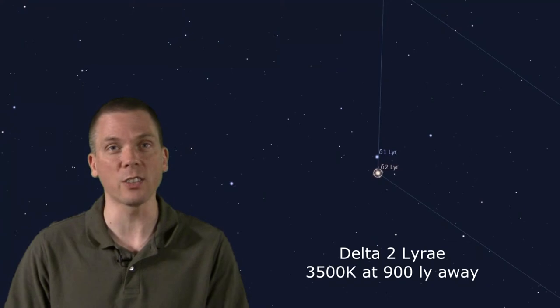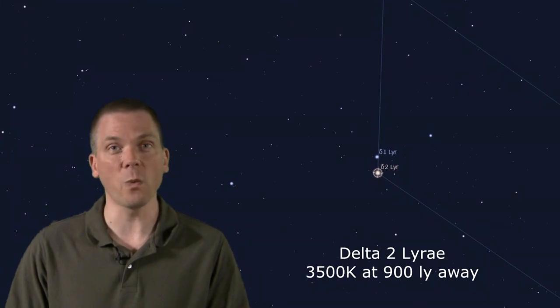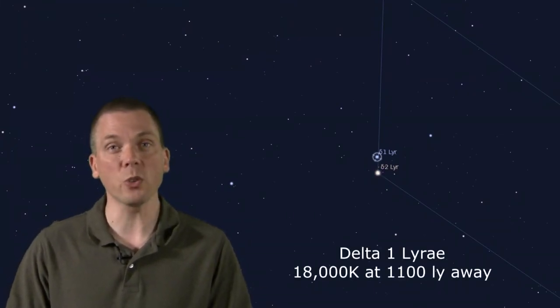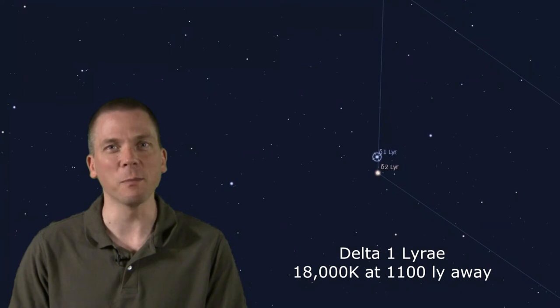The reddish star is delta-2 and is an M class star, therefore relatively cool, around 3500 Kelvin. It's about 900 light years away. The bluish white star, delta-1, is a spectral class B star, almost 1100 light years away from Earth, and is much hotter, hence the bluer color.